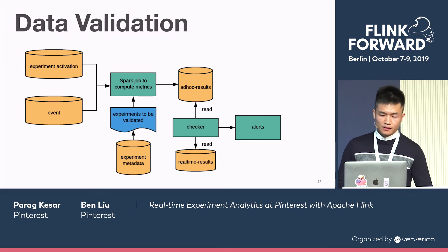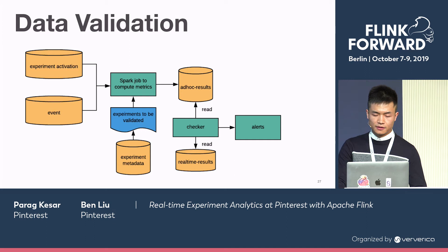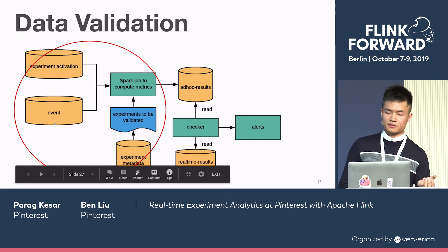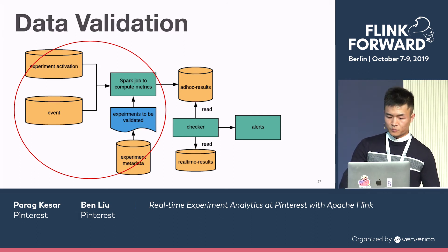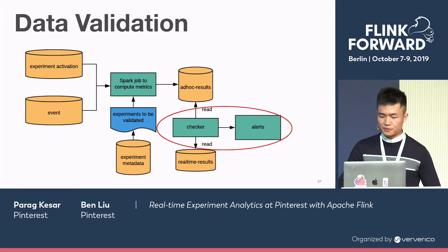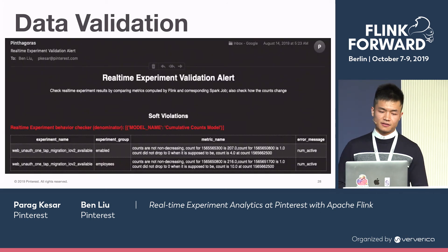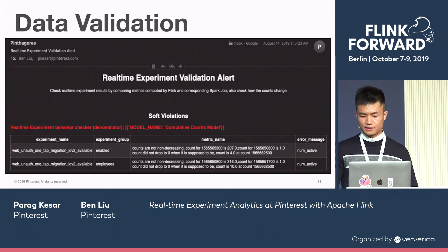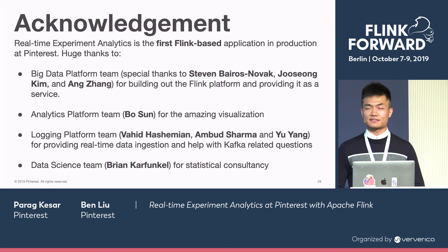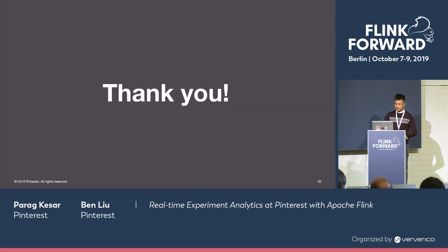For data validation, we built another batch pipeline that does exactly the same computation with the same configuration, reading from experiment activation and event data from S3, computing metrics and writing to a Hive table. A checker job reads both the Hive table data and the real-time results and compares them, alerting on discrepancies via email listing which experiments had wrong results. As mentioned by my colleague Steve this morning, this is the first Flink-based application in production at Pinterest, so huge thanks to all the folks who provided help.